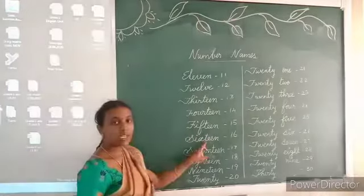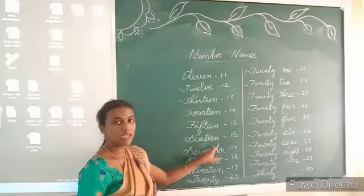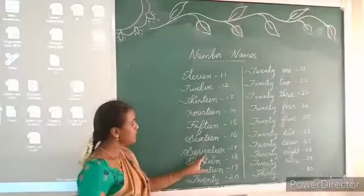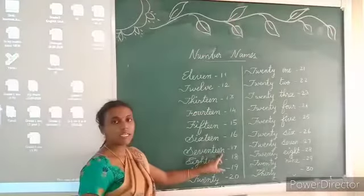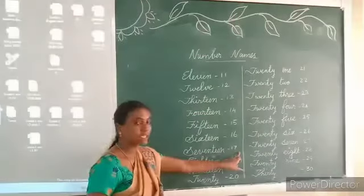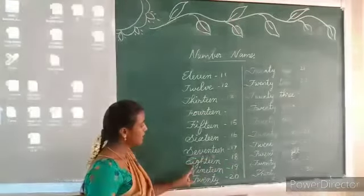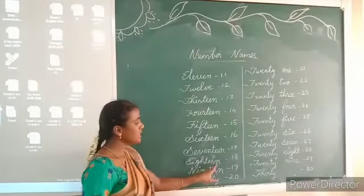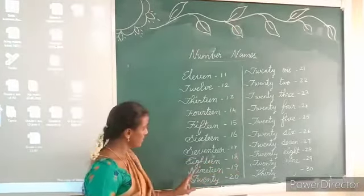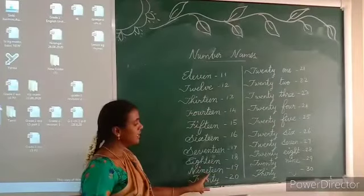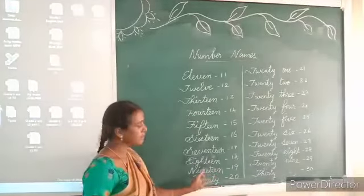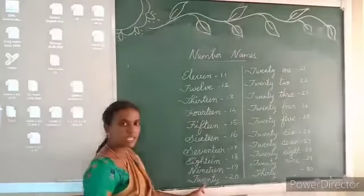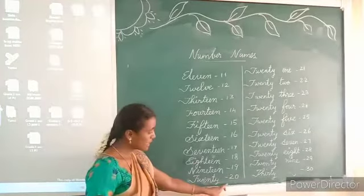Sixteen — S-I-X-T-E-E-N — 16. Seventeen — S-E-V-E-N-T-E-E-N — 17. Eighteen — E-I-G-H-T-E-E-N — 18. Nineteen — N-I-N-E-T-E-E-N — 19. Twenty — T-W-E-N-T-Y — 20.